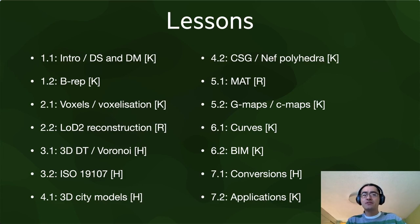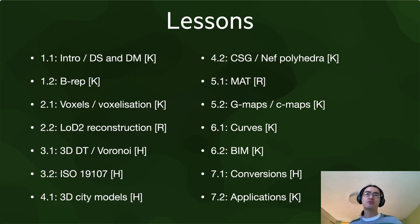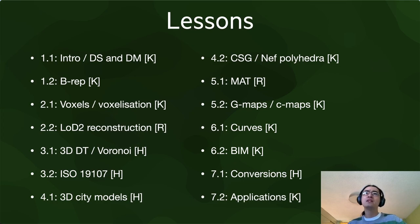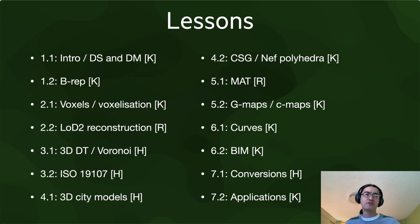There will be 14 lessons in this course. The first one is the introduction, and you can already find material on spatial concepts, data models, and data structures on the course website. I will be responsible for most of the lessons — marked with a K — while Hugo is marked with an H and Ravi with an R. There's a concepts part at the beginning, then we go through multiple kinds of data models and data structures, and we finish with higher-level things like 3D city models, BIM models, plus lessons on conversions and applications.